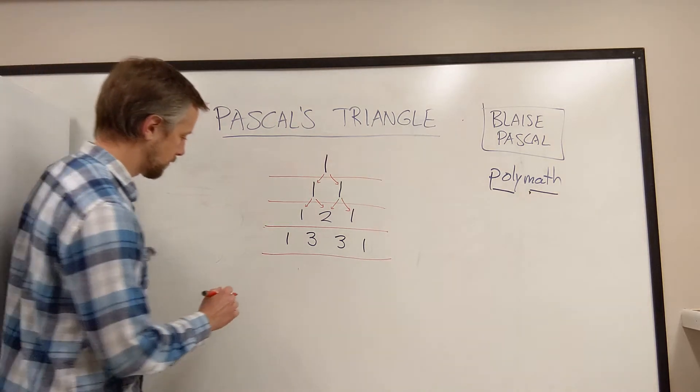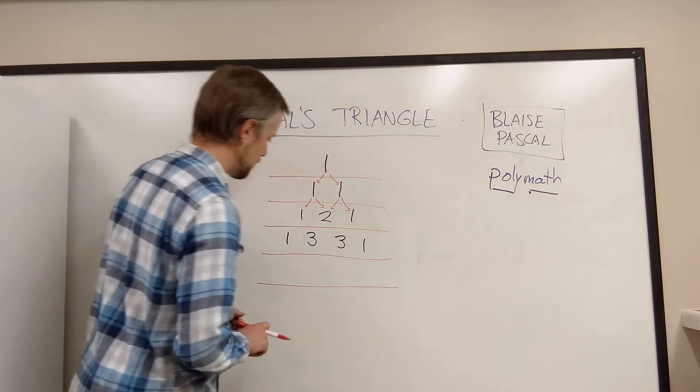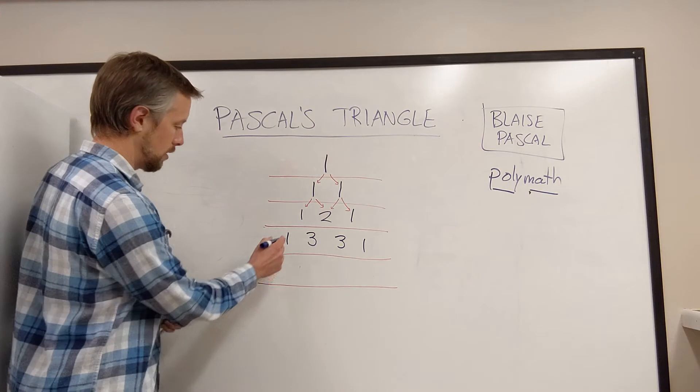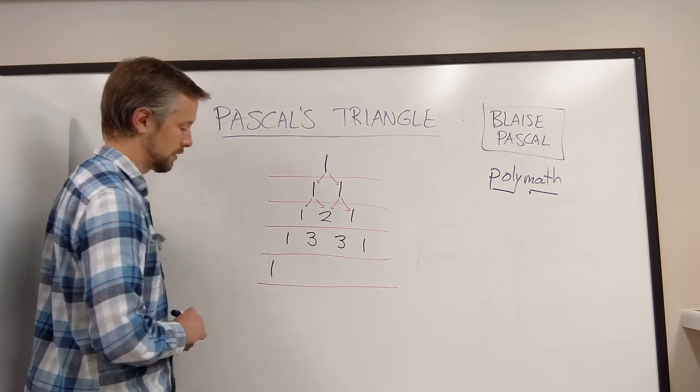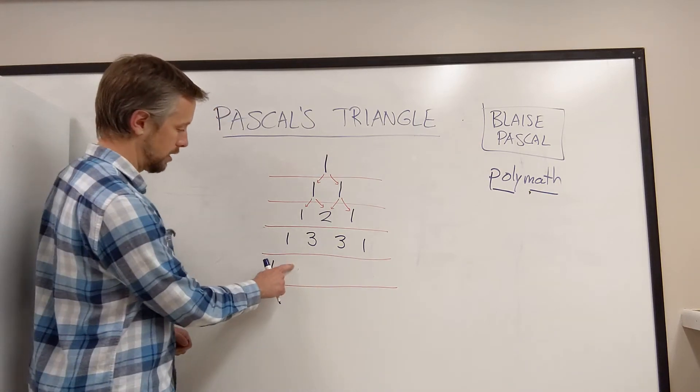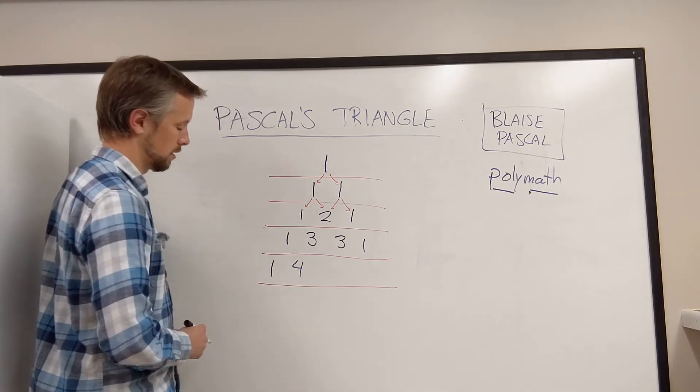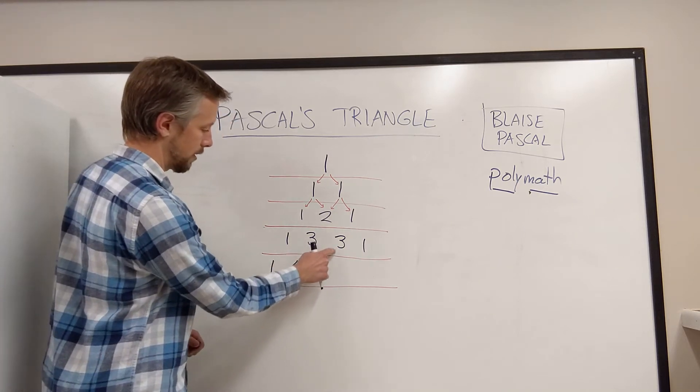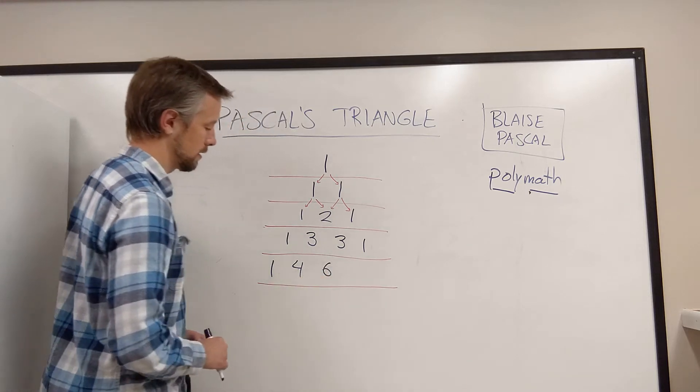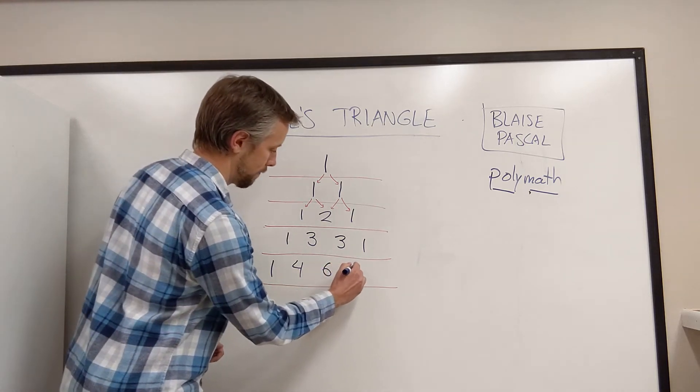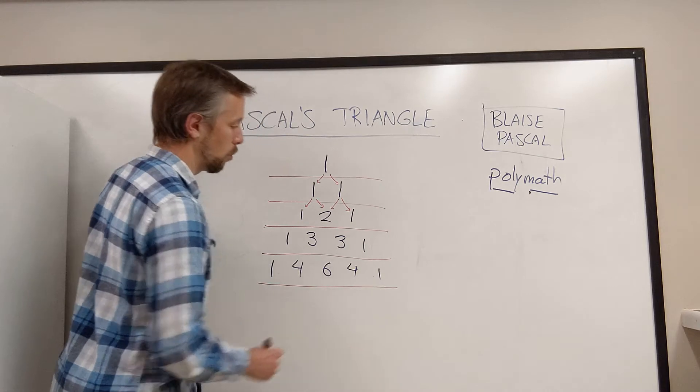Let's do one more. Okay. Again, this 1 gets brought down here. It stays as a 1. Here, we have a 1 and a 3 colliding to make a 4. Here, we have a 3 and a 3 colliding to make a 6. Here, again, a 4. And here, finally, a 1.